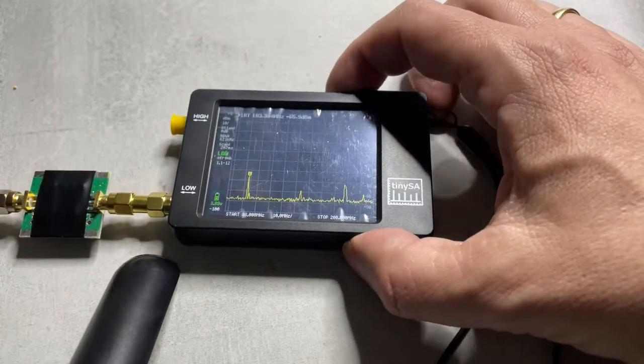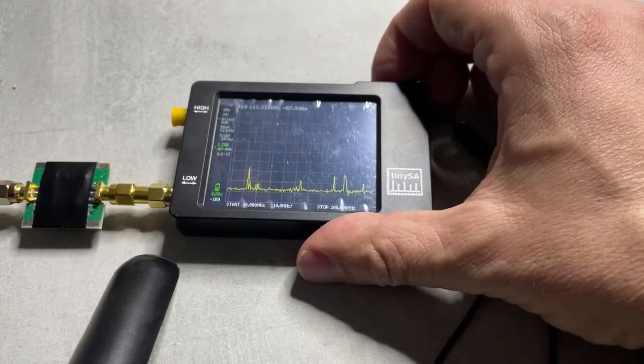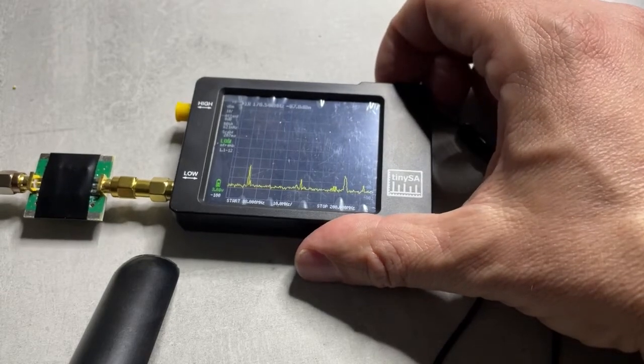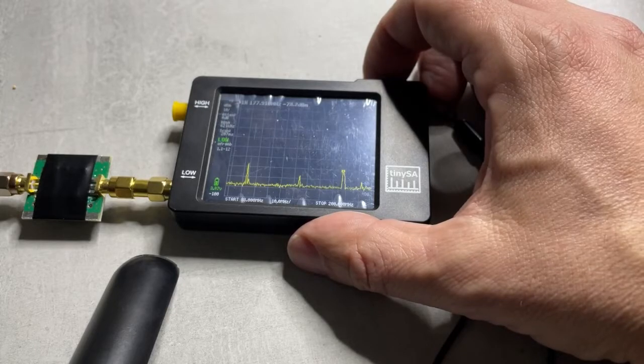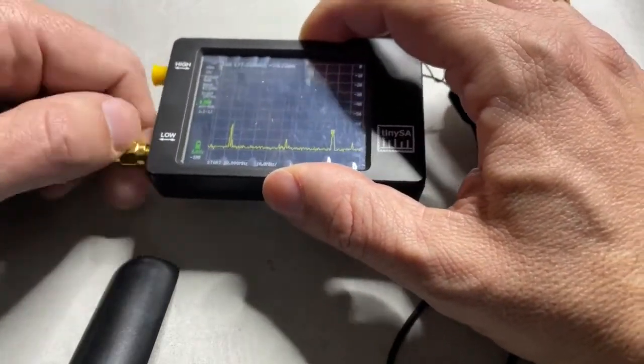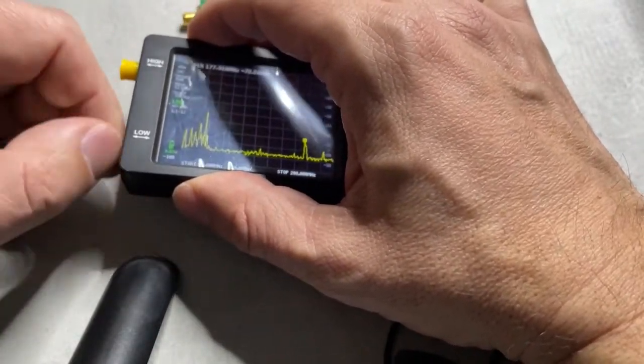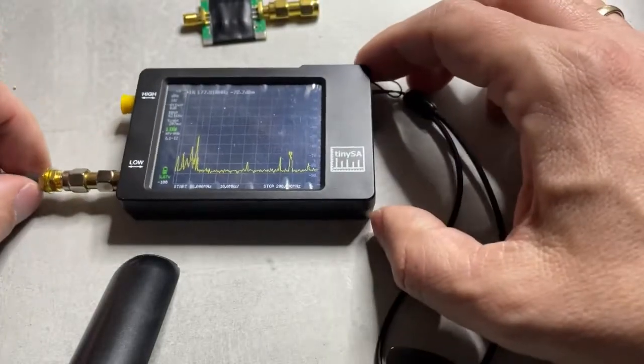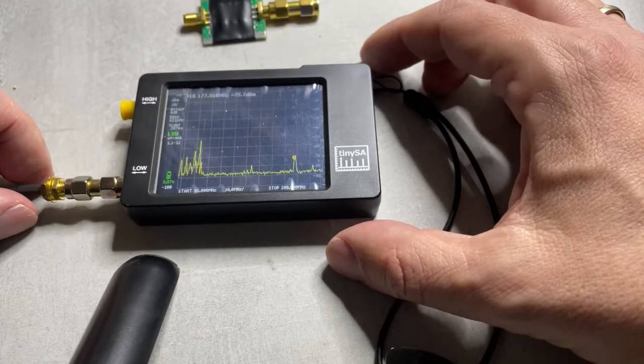I'll move the marker over to that signal and see if it makes a change when I take away the broadcast band filter. So we have minus 73 dBm, and that's more or less the same as without the filter, so that is good. On the left you can see that the broadcast signals come back.